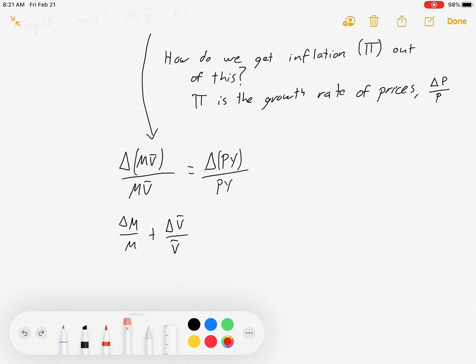So the growth rate of MV bar is approximately equal to the growth rate of M plus the growth rate of V bar. And then on the right-hand side, the growth rate of PY equals the growth rate of P plus the growth rate of Y. And this is a good approximation for our purposes.